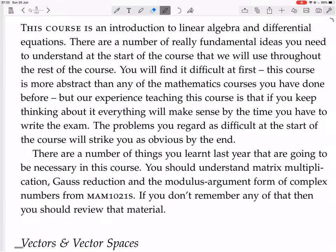So what are these three things they're talking about? Matrix multiplication, Gauss reduction, that's also called row reduction, and the modulus argument form of complex numbers.